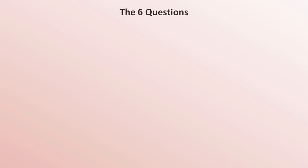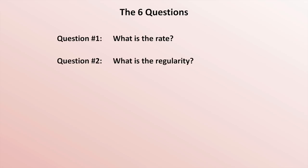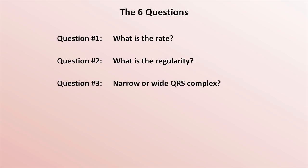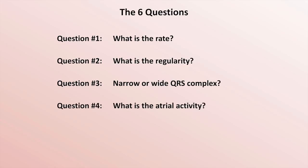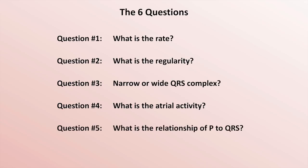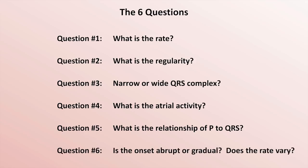So what are the important questions? Question 1: What is the rhythm's rate? Question 2: What is the regularity? Question 3: Is the QRS complex narrow or wide? Question 4: What is the atrial activity? Question 5: What is the relationship of P-waves to QRS complexes? And finally, a two-part question: Is the onset of the rhythm abrupt or gradual, and does the rate vary? I'll discuss the significance of each question one at a time.